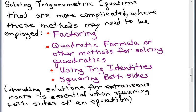This is part of a series of videos where we're solving more complicated trigonometric equations where we might need to use these methods: factoring, the quadratic formula or other methods for solving quadratics, using trig identities, or squaring both sides. We also might be dealing with multiple angles. Keep in mind that if any time you square both sides of an equation, it's essential that you check solutions for extraneous roots.